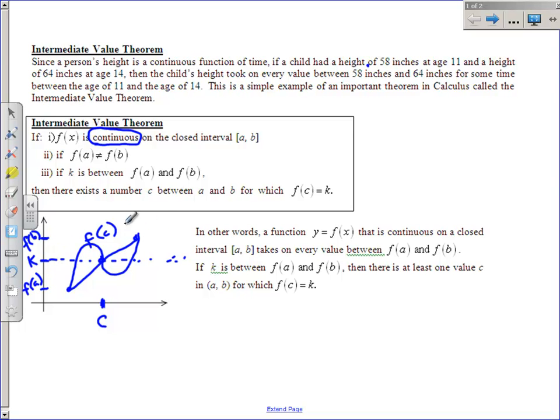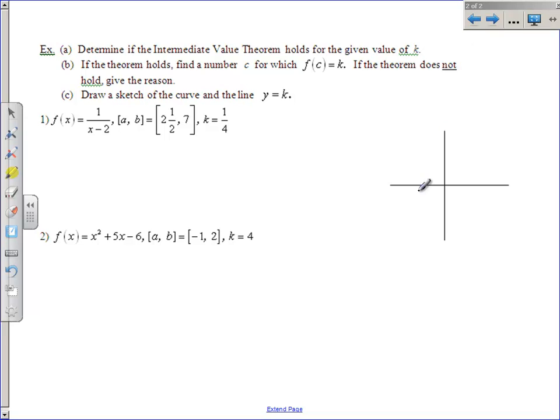Now this does not say that you can't go taller than f of b or even lower than f of a. That's fine. You can do that or maybe not, but the only thing we know is that all of these y values get crossed with the graph at least once. So we'll take a look at a couple of examples.